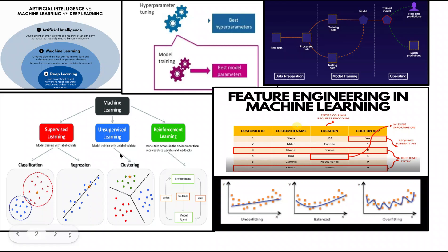Clustering takes data and groups it based on where the output belongs — the result comes as output based on the cluster group. In reinforcement learning, the computer is given a reward signal for taking actions that lead to desired outcomes. The computer then learns to take actions that maximize the reward signal. This type of learning is often used for tasks such as playing games and controlling robots.